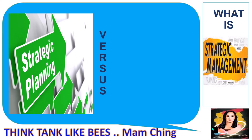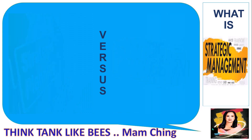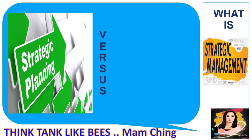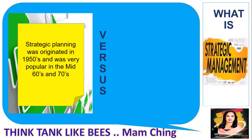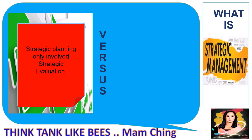What is the difference between strategic planning and strategic management? Strategic planning originated in the 1950s and was very popular in the mid-1960s and 1970s. It was cast out during the 1980s, then saw a revival in the 1990s and is widely practiced today in the business world. Strategic planning only involved strategic evaluation.